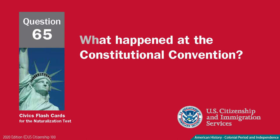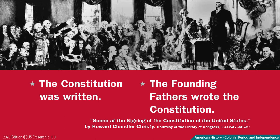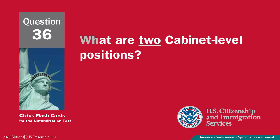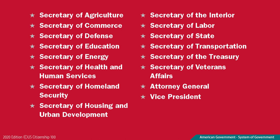What happened at the Constitutional Convention? The Constitution was written. What are two cabinet-level positions? Secretary of Agriculture and Vice President.